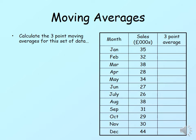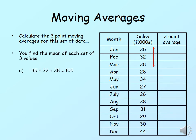Here we have a set of data from January to December, and what you need to do is work out the three-point average. All we do is simply find the mean of the first set of values, and then not include the first one and move forwards. It's better illustrated with an arrow. Firstly, we need to do the average of the first three. The total of that is 105; we divide that by three and the answer is 35. That being the average of the three, it goes in the middle — where February is.